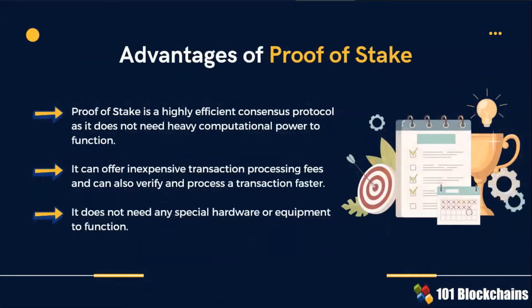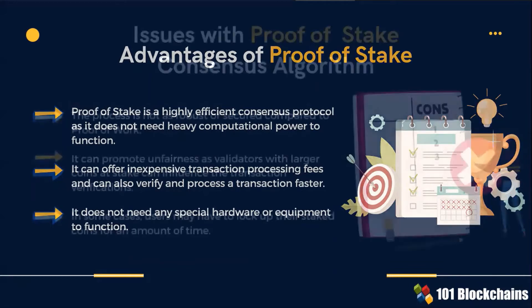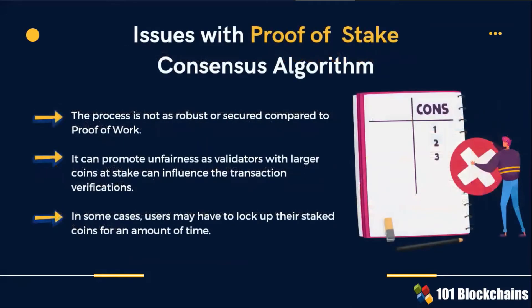Proof-of-Stake is a highly efficient consensus protocol. It can offer inexpensive transaction processing fees and does not need any special hardware or equipment to function. However, the process is not as robust or secured compared to Proof-of-Work. Proof-of-Stake can also be subject to unfairness, as validators with larger coins at stake can influence the transaction verification.